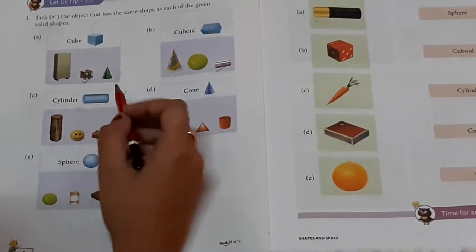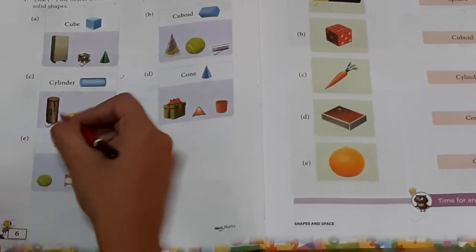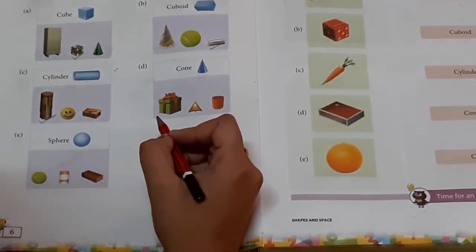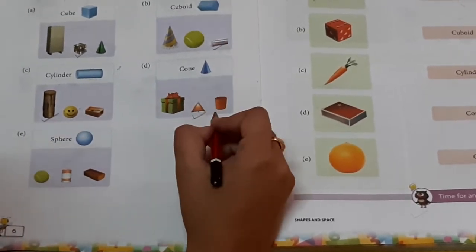Cylinder. Is it cylinder? Yes, then tick. Is it cone? No. Is it cone? Yes, then tick.